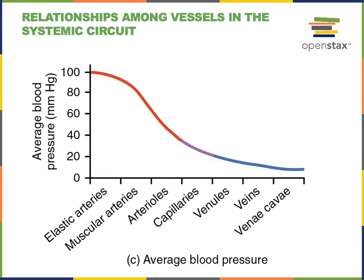Blood moves in response to blood pressure, which is the force of blood pushing out on the walls of the blood vessel. The heart generates blood pressure by pumping blood into the arteries, so the elastic arteries have the highest blood pressure. Blood flows from an area of high pressure to lower pressure as it flows from elastic arteries into muscular arteries, arterioles, capillaries, venules, and veins. This blood pressure is also known as hydrostatic pressure.